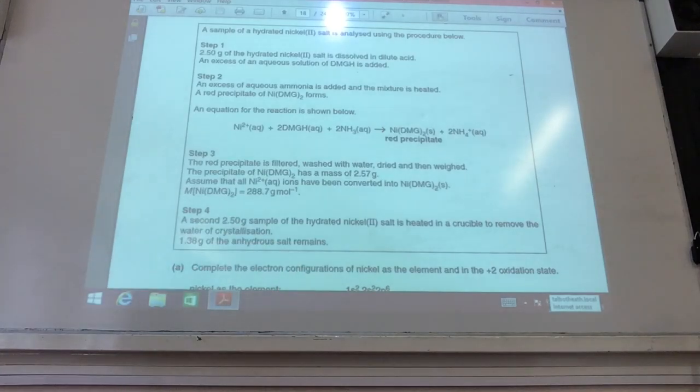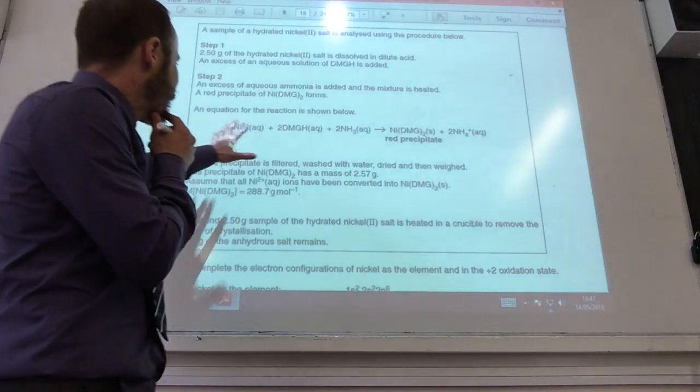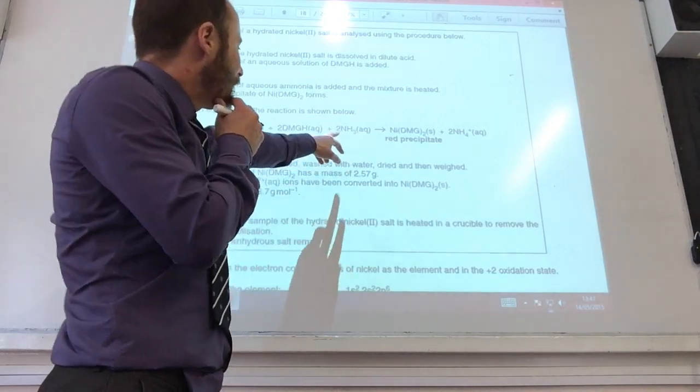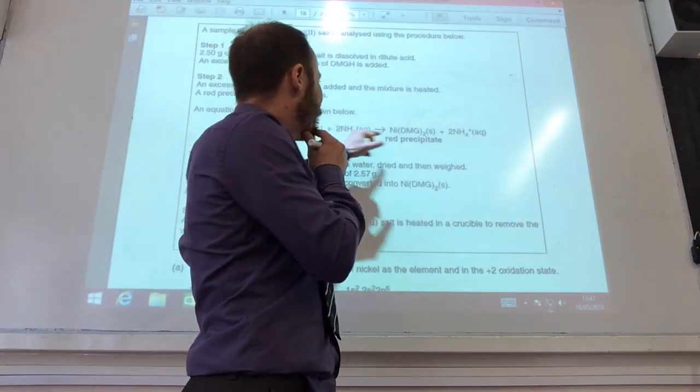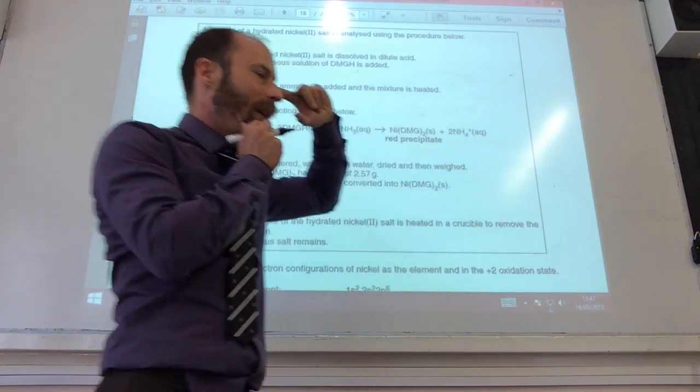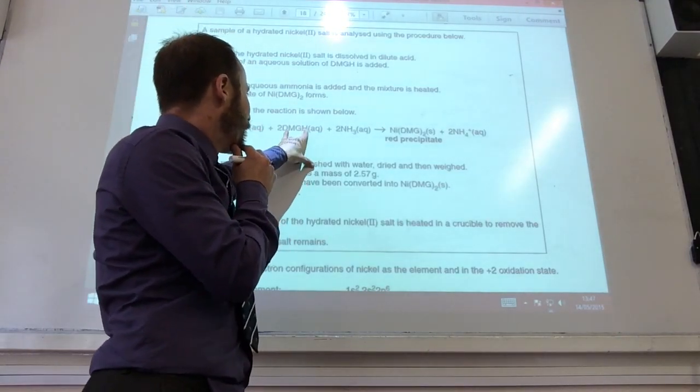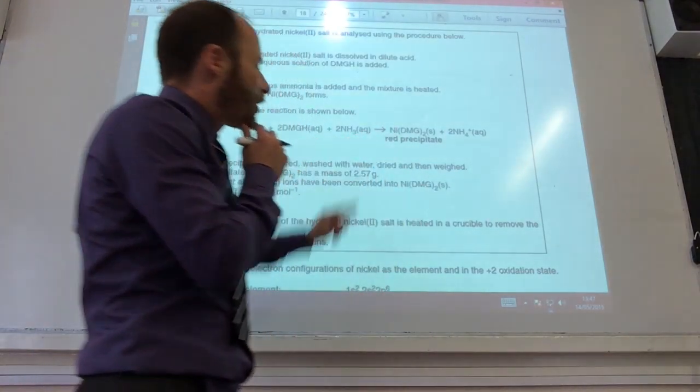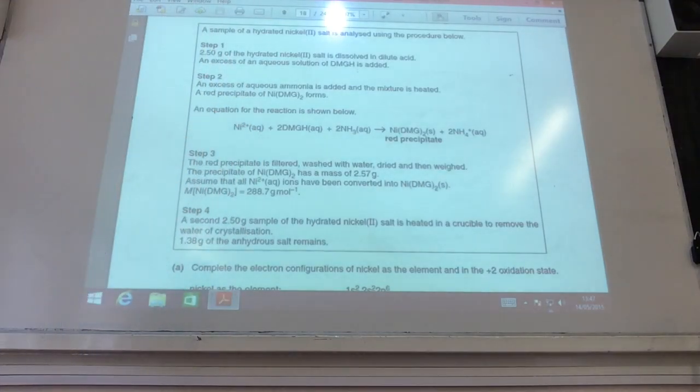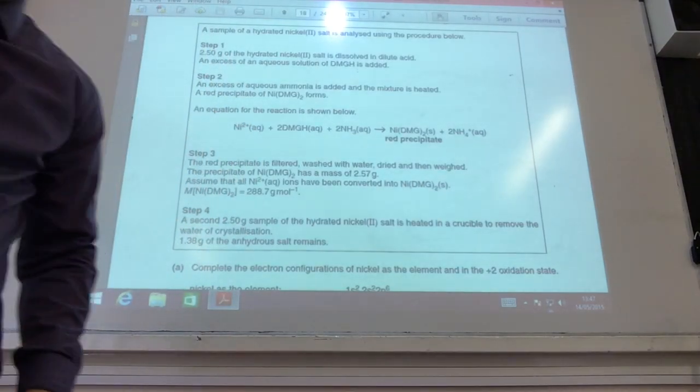So we'll whiz through. It says state and explain the role of ammonia in step two. This is step two. What's ammonia doing? Well, let's have a look. Ammonia here and it's ammonium there. So it appears that ammonia is actually accepting the hydrogen. It looks like that hydrogen is coming from this guy here because he's lost the hydrogen. So ammonia is acting as a base. It is accepting protons from the ligand.